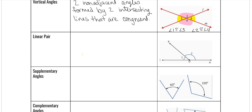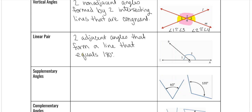A linear pair are two adjacent angles that form a line, and they equal 180 degrees. In this picture, angle one and angle two are a linear pair. The measure of angle one plus the measure of angle two is equal to 180 degrees. Because we're talking about degrees, you have to put the m in the front, because we're talking about actual measures — numbers.